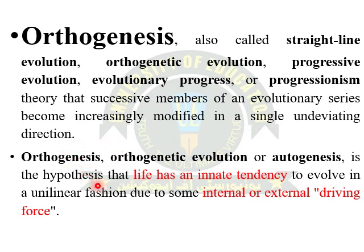Orthogenesis is basically a theory in which the successor members of an evolutionary series became increasingly modified in a single, undeviated direction. Every living organism has an innate tendency to evolve in a unilinear fashion due to some internal or external driving forces.